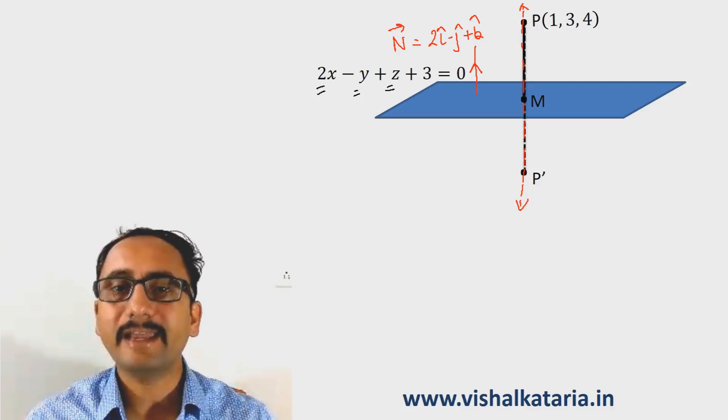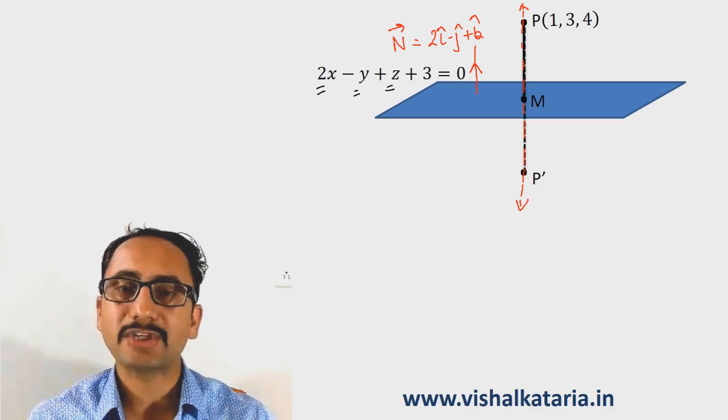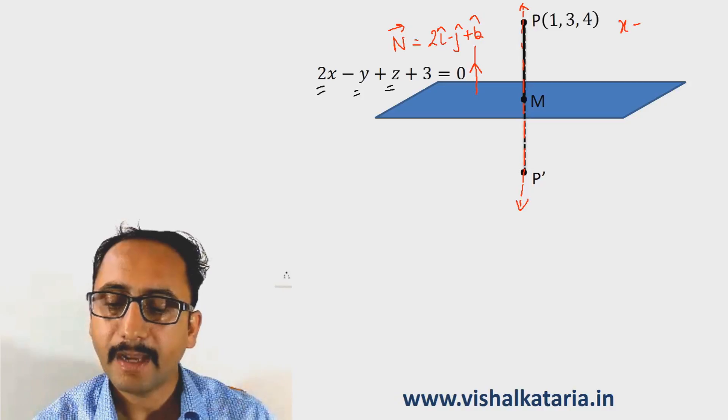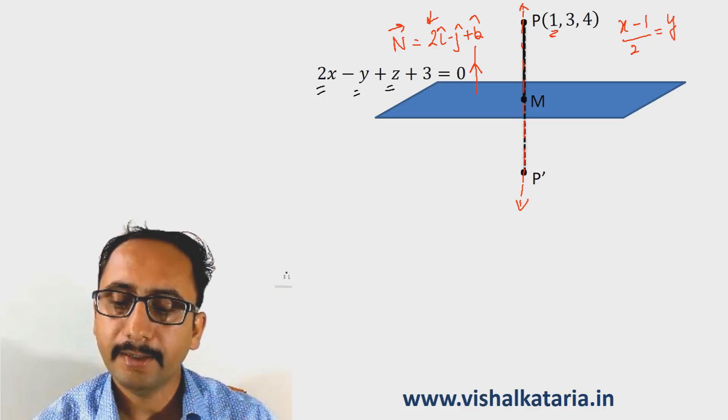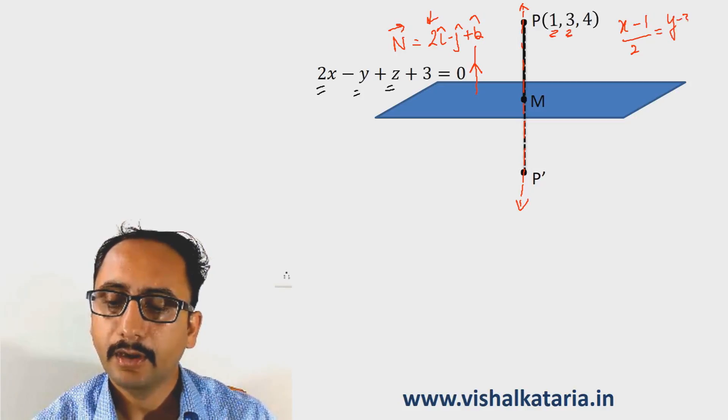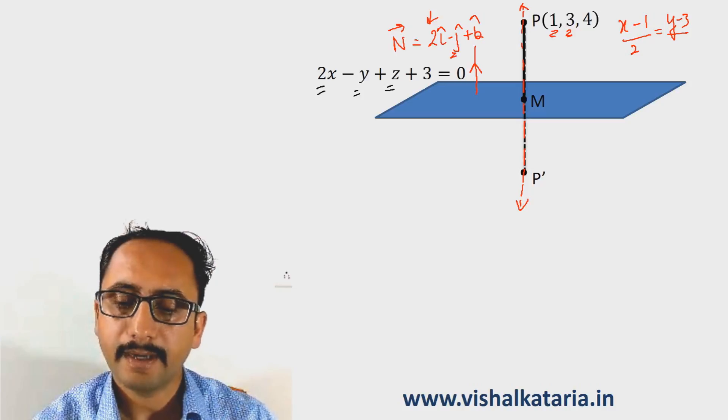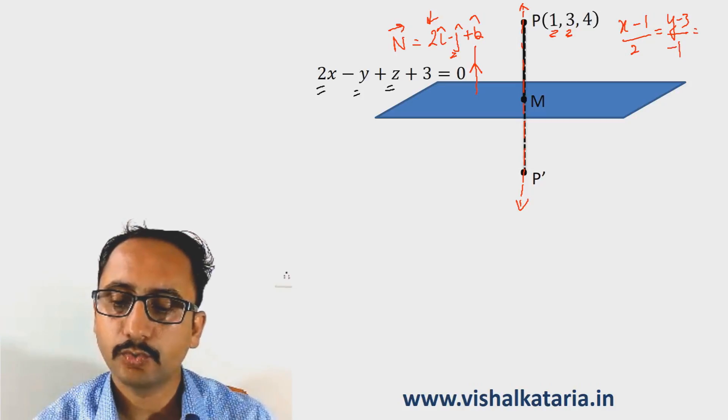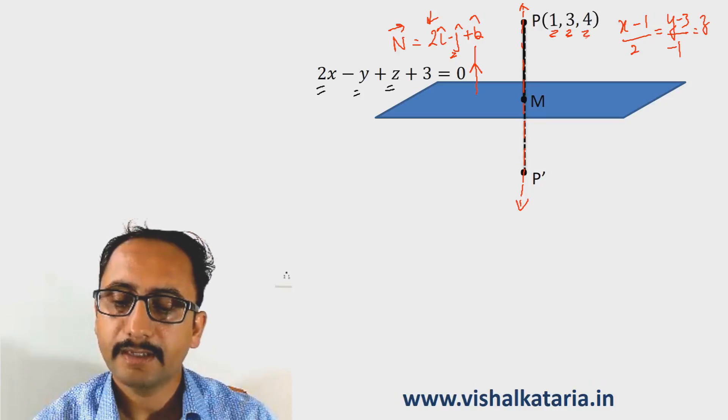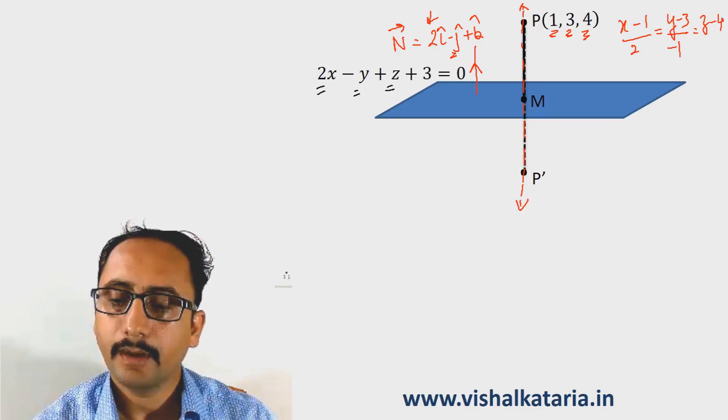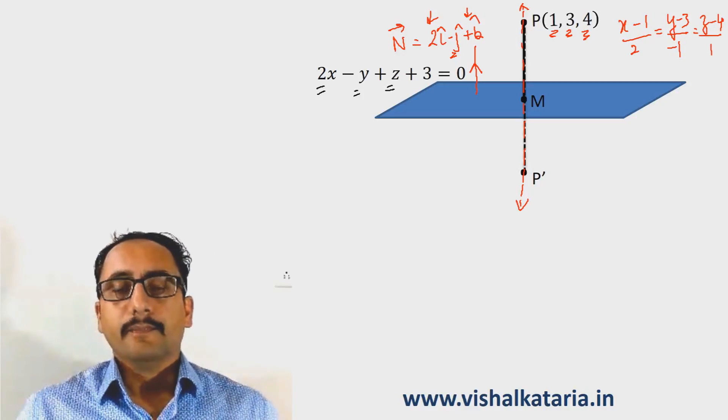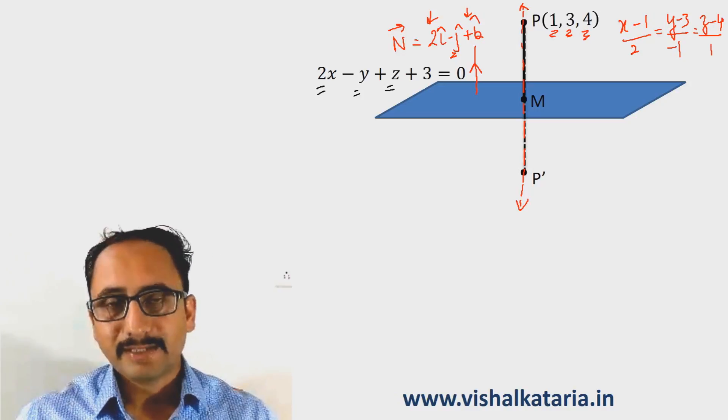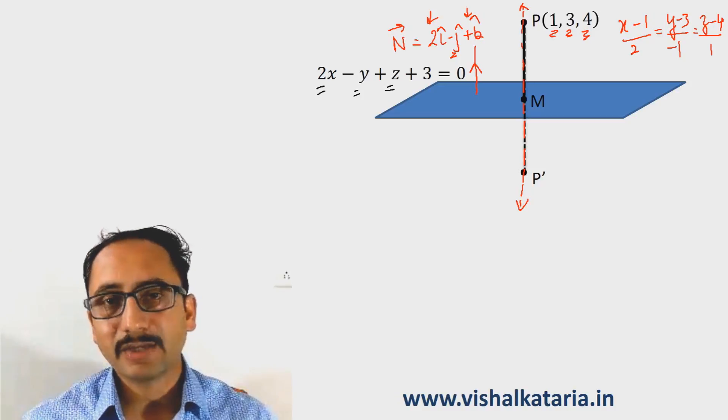Hence, the equation of the line passing through P is (x - 1)/2 = (y - 3)/(-1) = (z - 4)/1. Every point on the line passing through P must satisfy this equation. M also lies on this line.